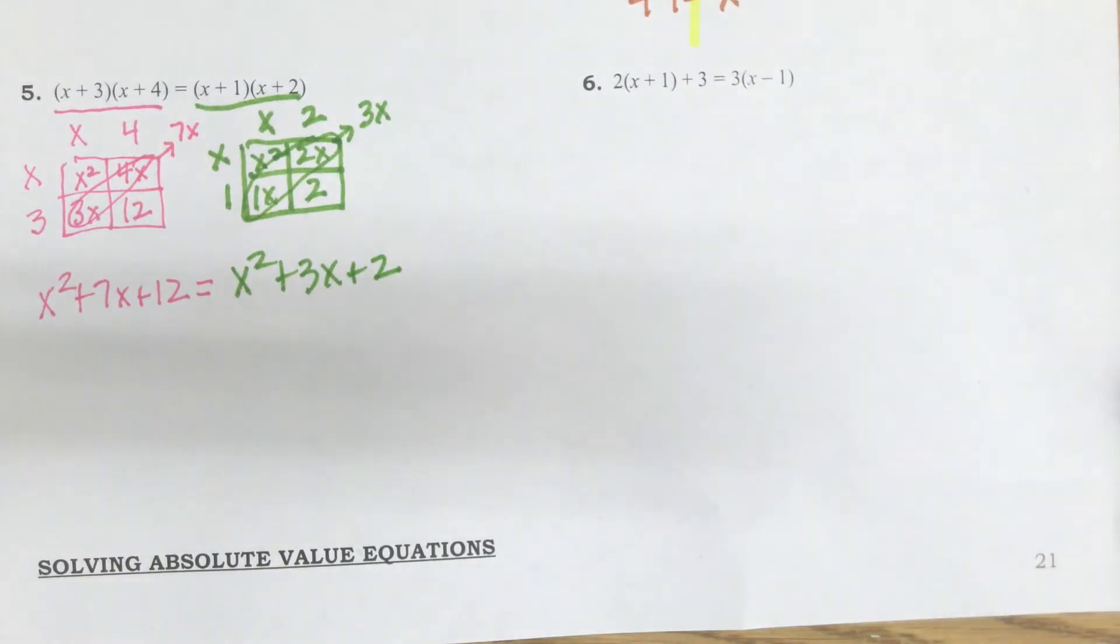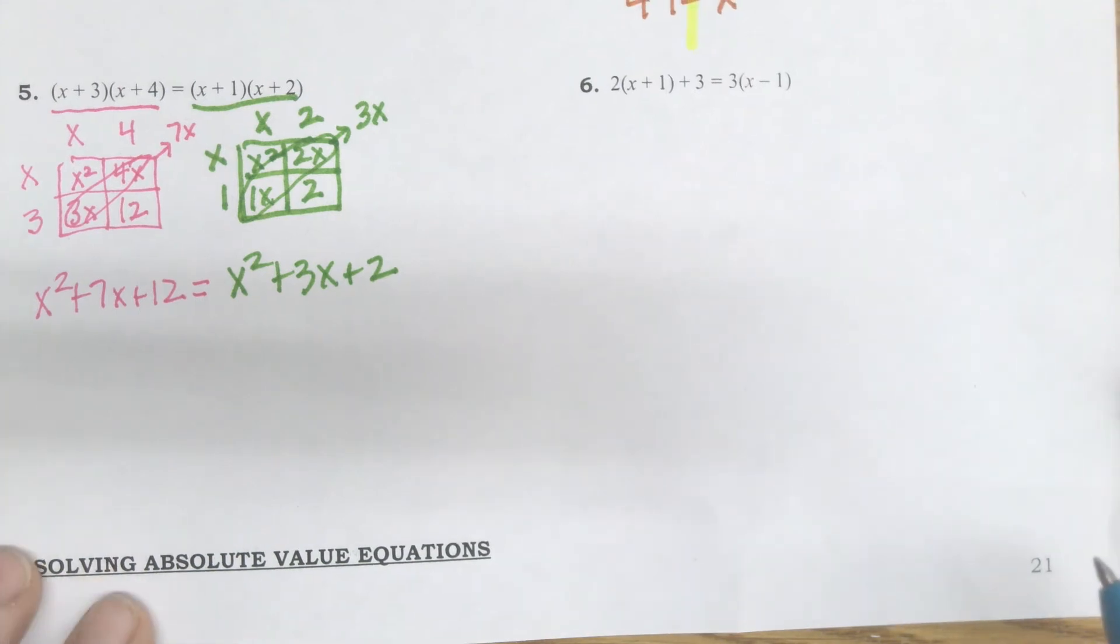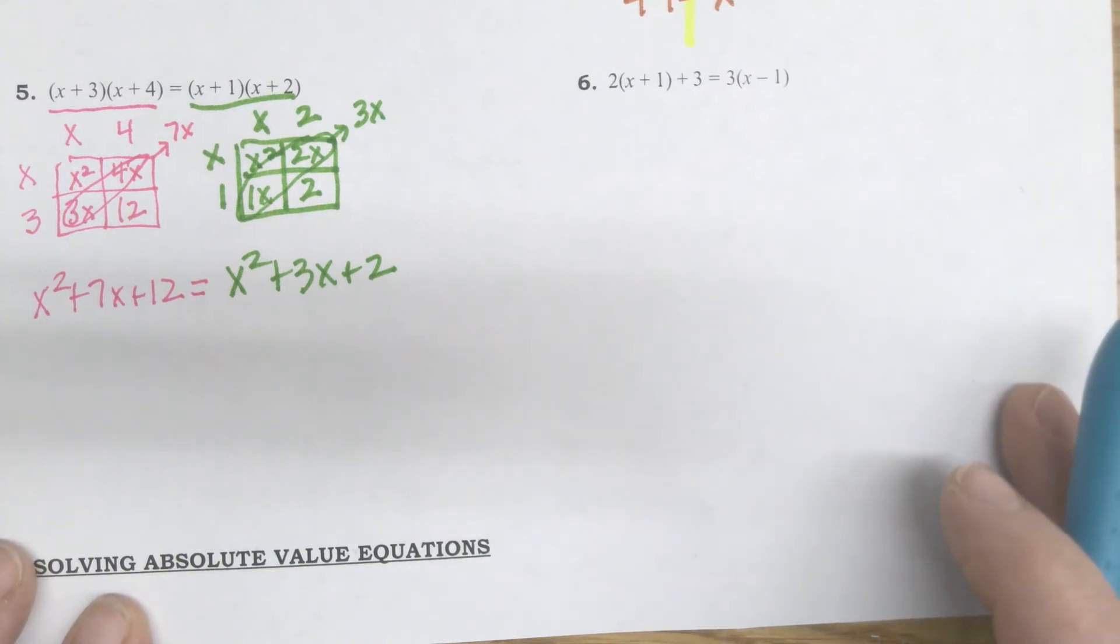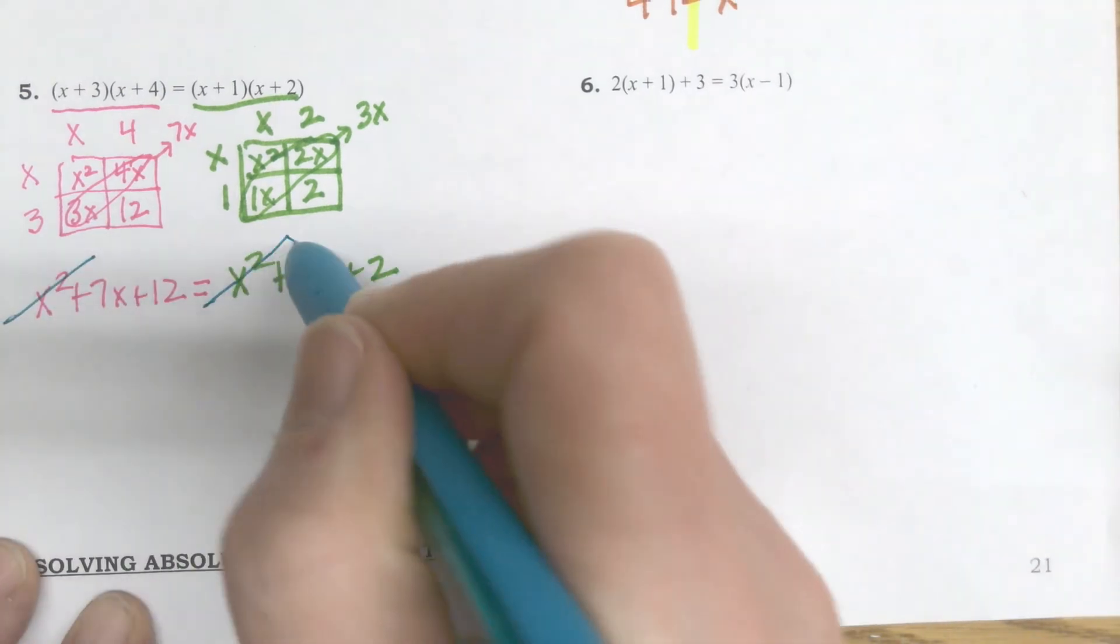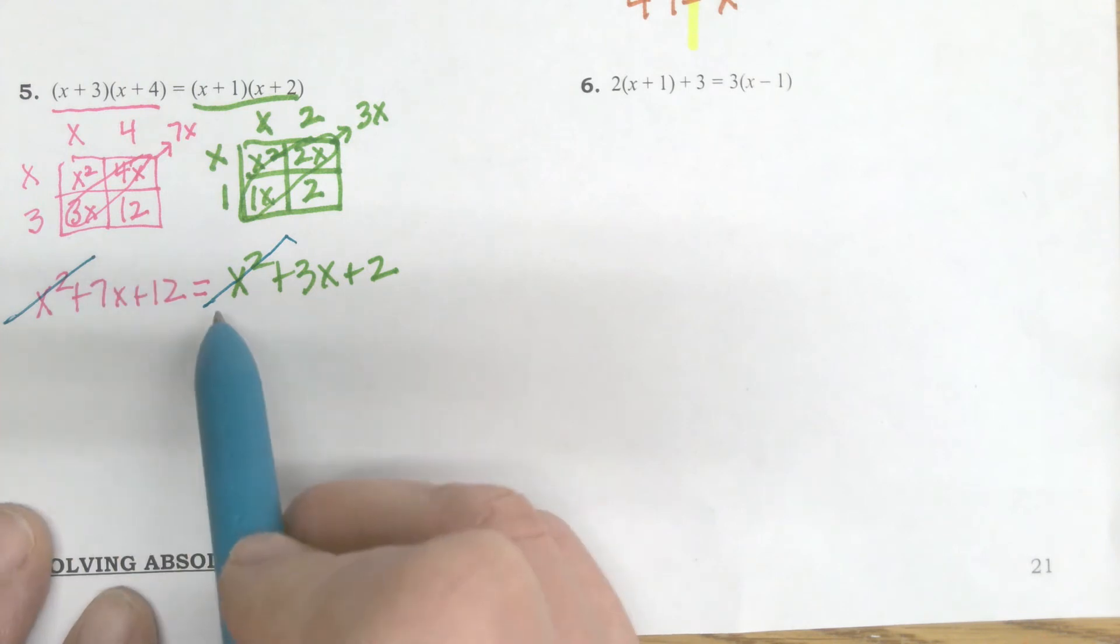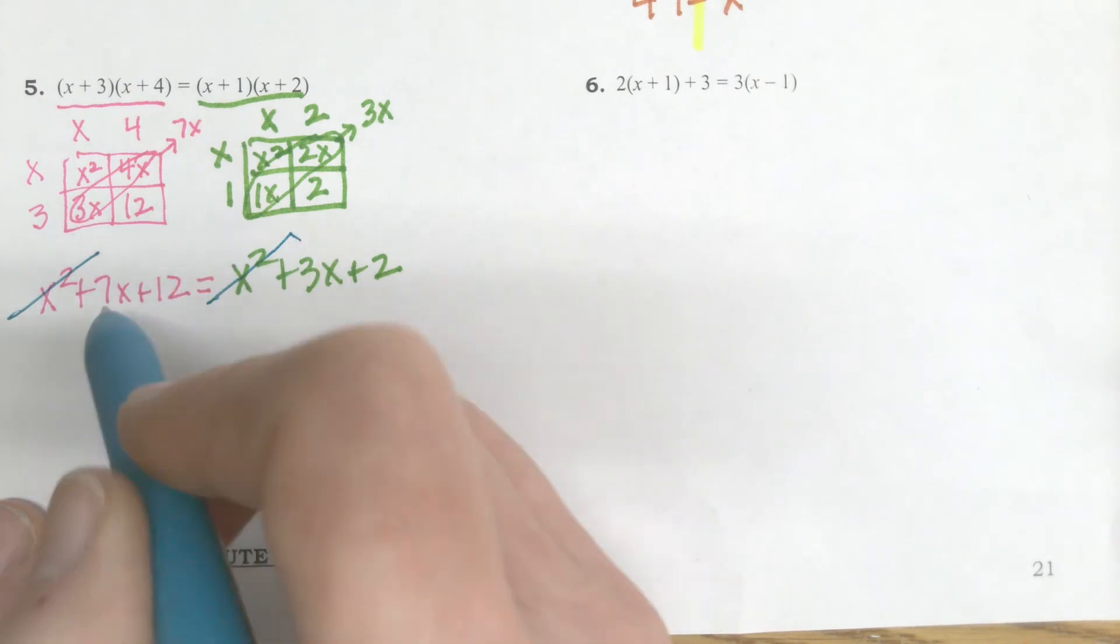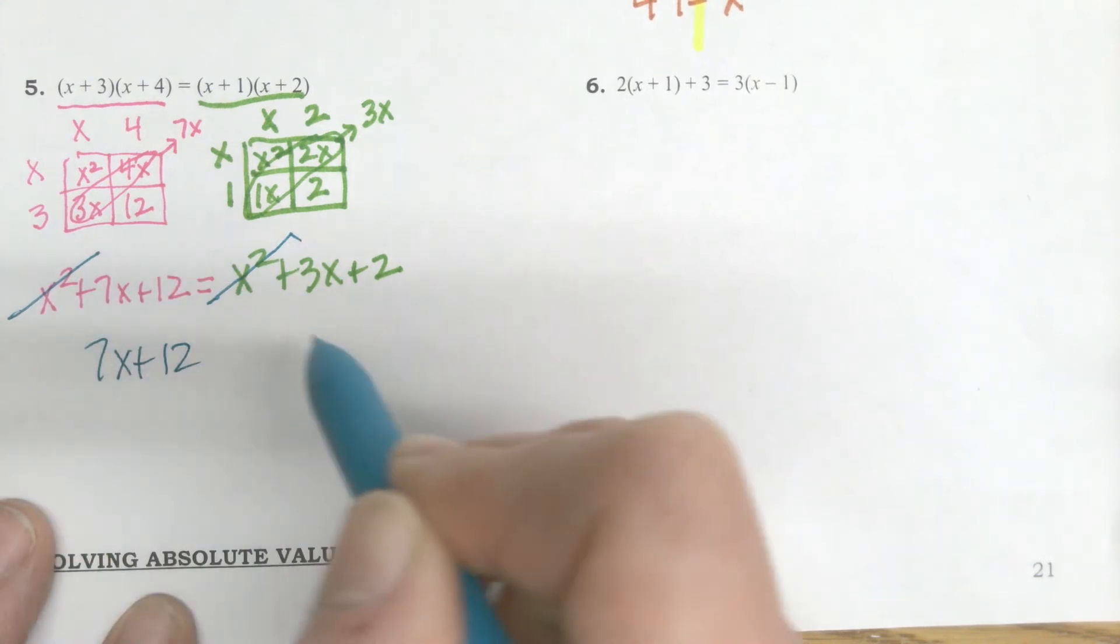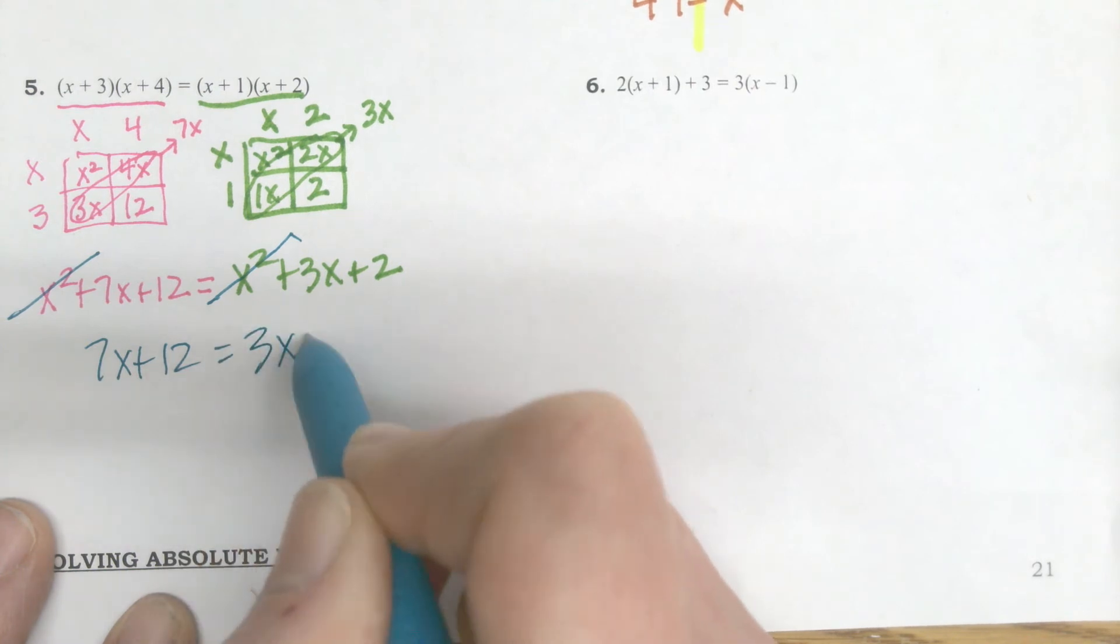Again, it turns out that when we're working on these, our squared terms are going to be identical. Not always going to be the case. And in the future, we're going to work with some that it's not. Trev, I asked you to put that away, right? Why is it still out? Put it away. Thank you. x times x. I didn't say throw it on the floor.